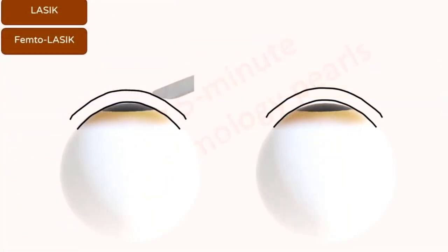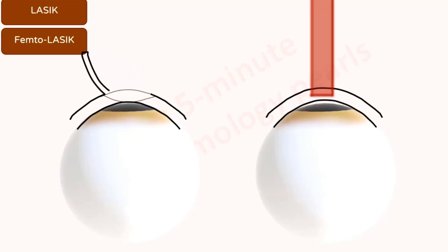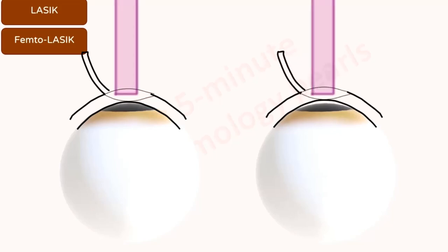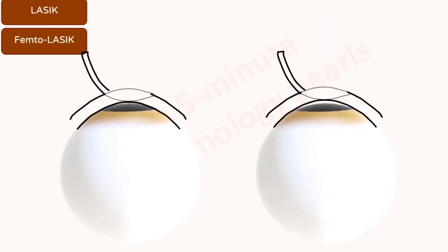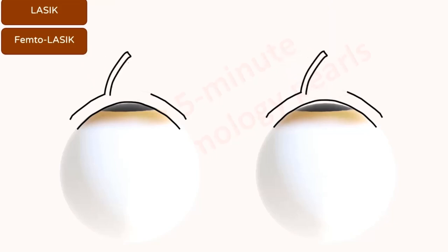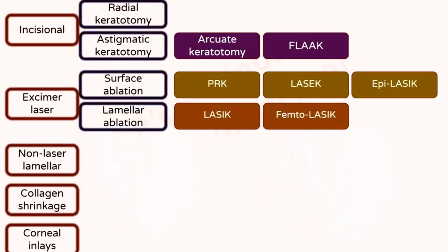LASIK, or laser in-situ keratomileusis, is the most commonly performed refractive surgery. The difference between EPILASIK and LASIK is that in LASIK, a lamellar corneal flap is created at the intrastromal level rather than just at the epithelium, by means of a microkeratome. In femtosecond LASIK, the same flap is created by a femtosecond laser and then elevated. Excimer laser is used for photoablation in both cases to the residual stromal bed, and the flaps are reposited at the end of the procedure. The excimer laser procedures can correct refractive errors from about +6 diopters to −14 diopters.